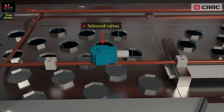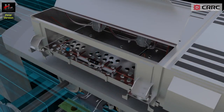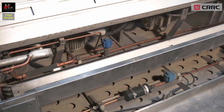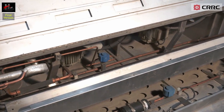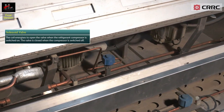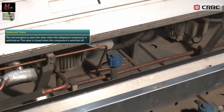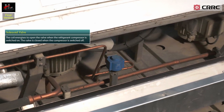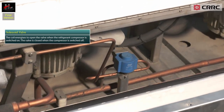The solenoid valve consists of two parts: the valve body installed in the refrigerant liquid line, and the solenoid coil connected to the electrical control system. The coil energizes to open the valve when the refrigerant compressor is switched on, and the valve is closed when the compressor is switched off.